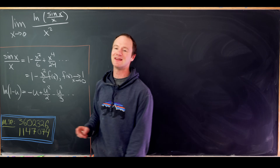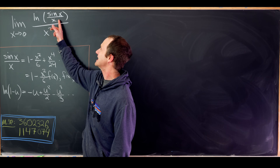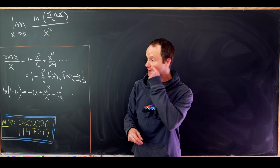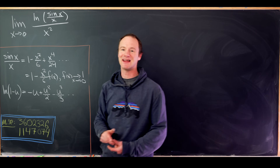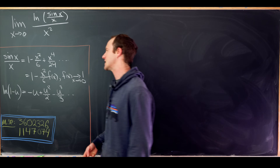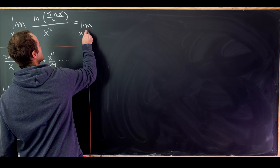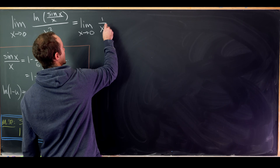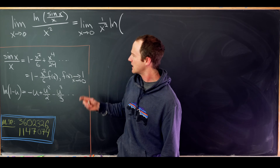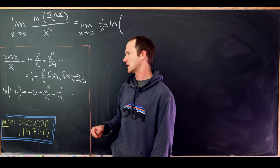As x goes to zero, the denominator clearly goes to zero. The inside of the natural log, sin(x)/x, approaches one — a well-known trigonometric limit — so the numerator approaches ln(1) = 0. This is of the form zero over zero. We rewrite it as (1/x²) times ln(sin(x)/x), and recall that sin(x)/x has a nice Maclaurin expansion.